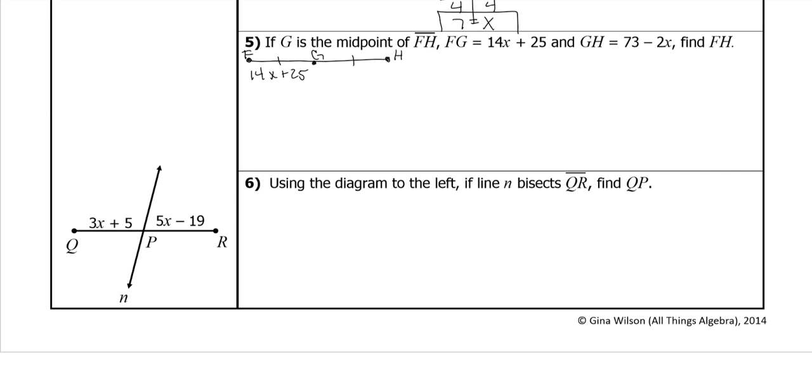FG is 14x plus 25, and then GH is 73 minus 2x. So again, they're midpoints so they're the same, so we're going to set them equal. Subtract 14x from both sides. Bring my 25 down. Bring my 73 down. Negative 2x minus 14x is negative 16x.